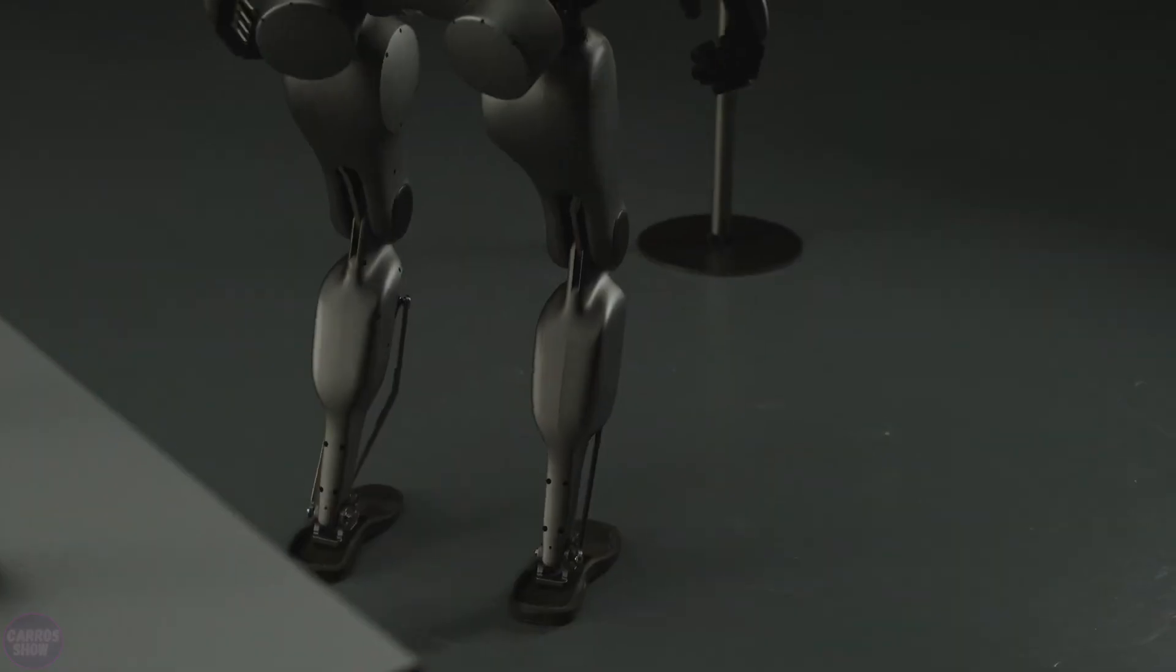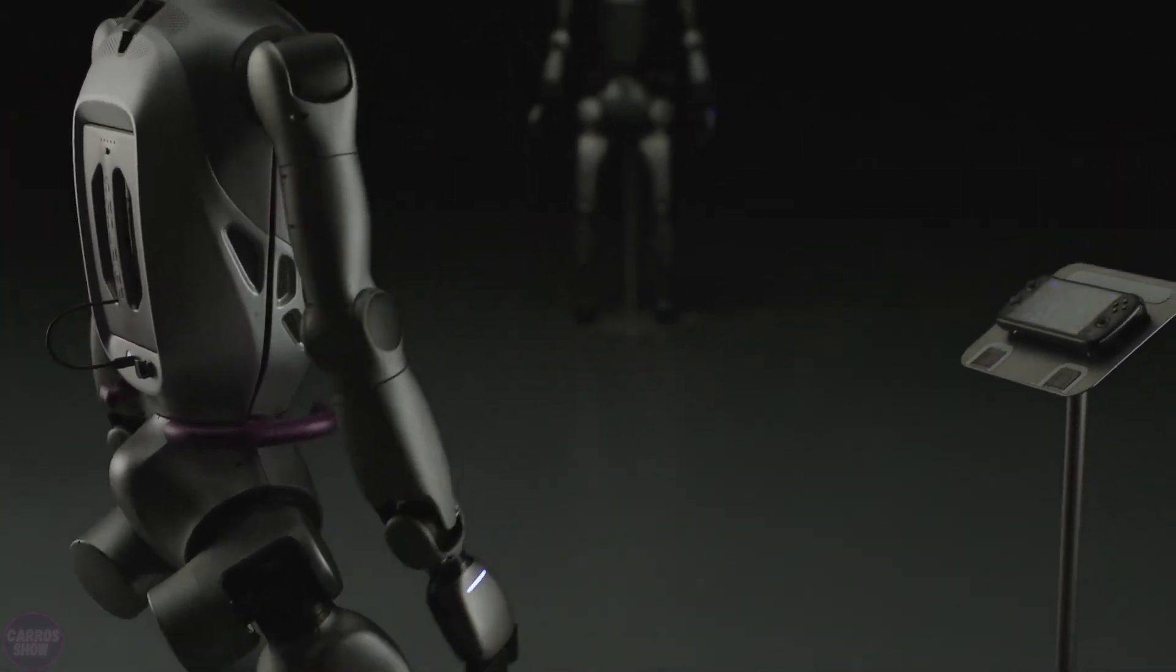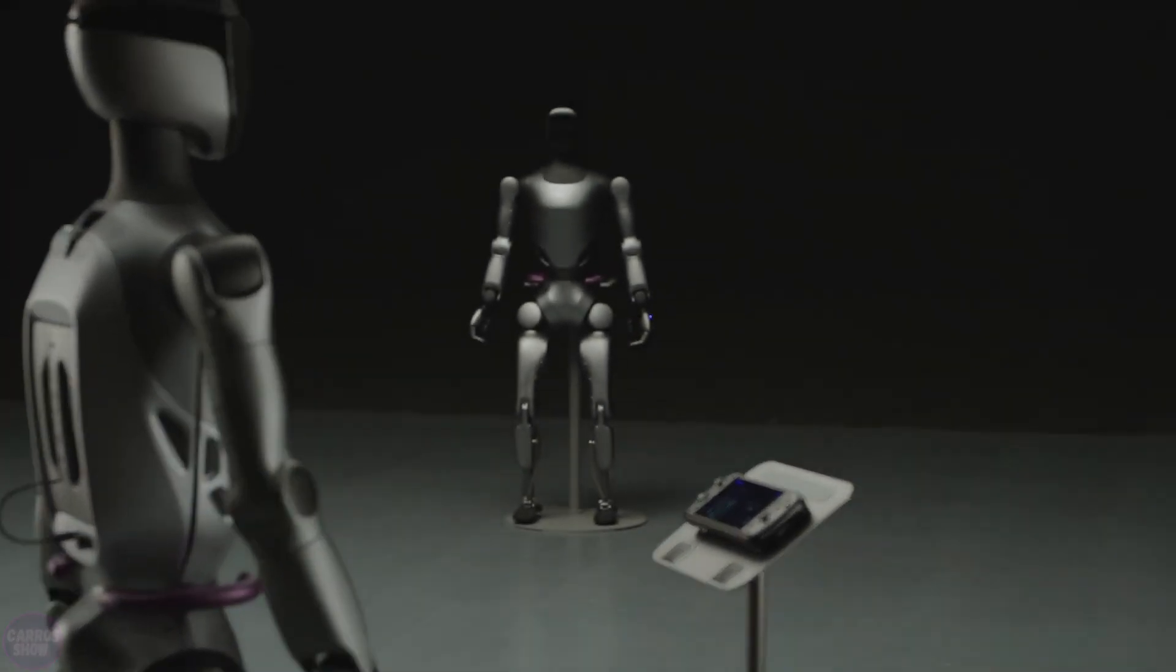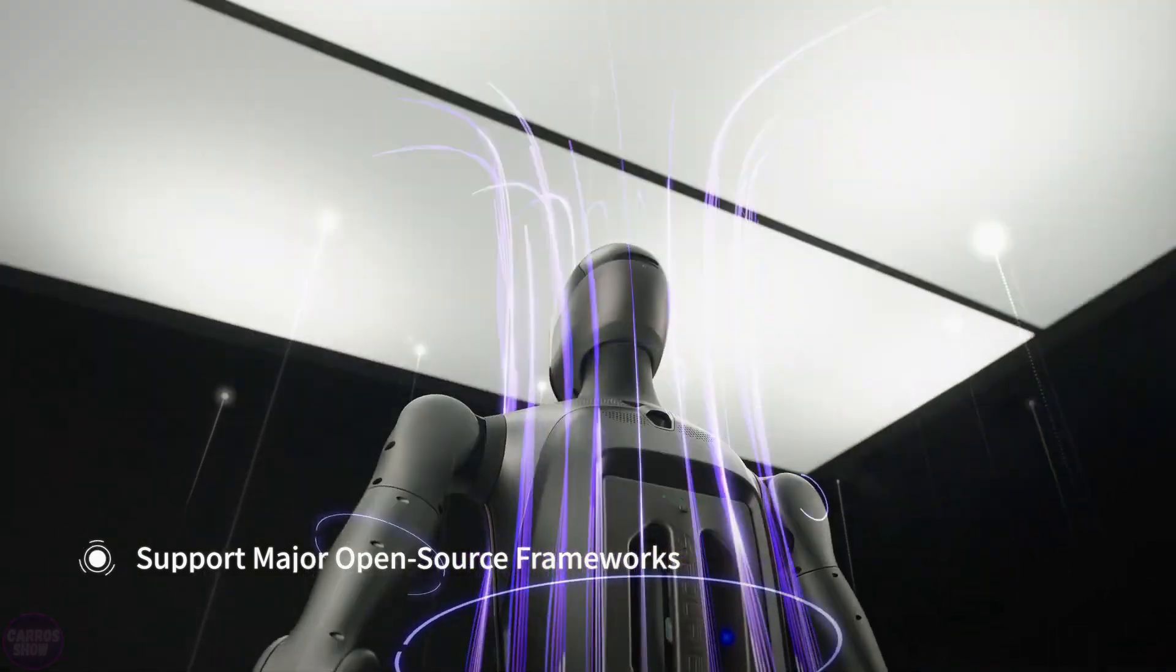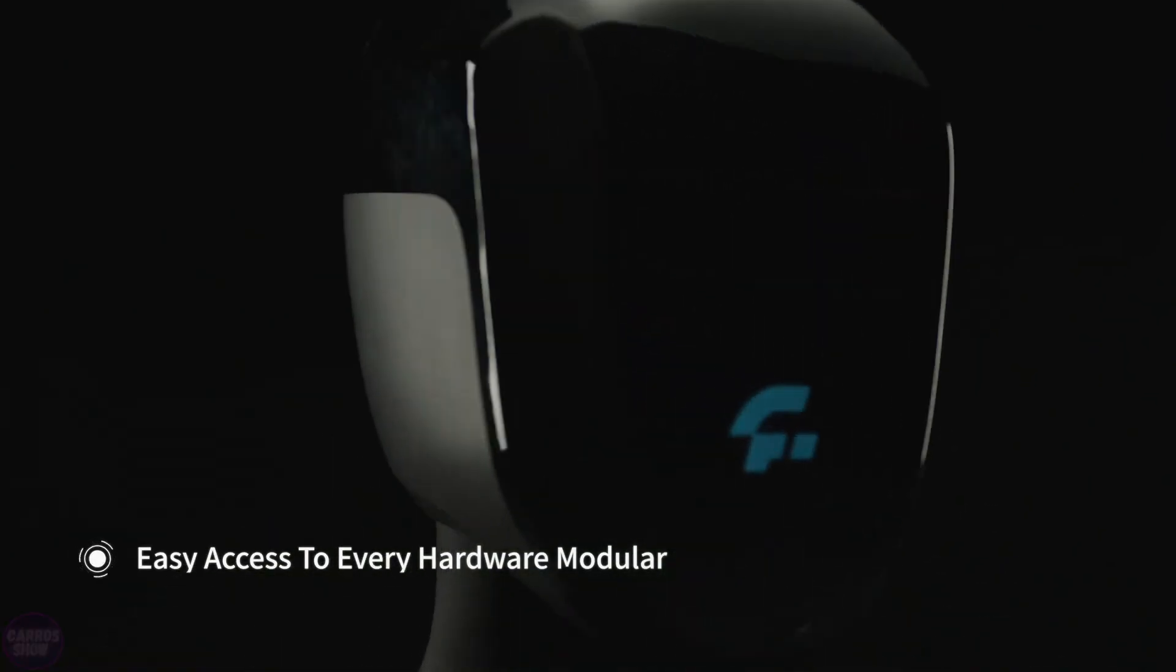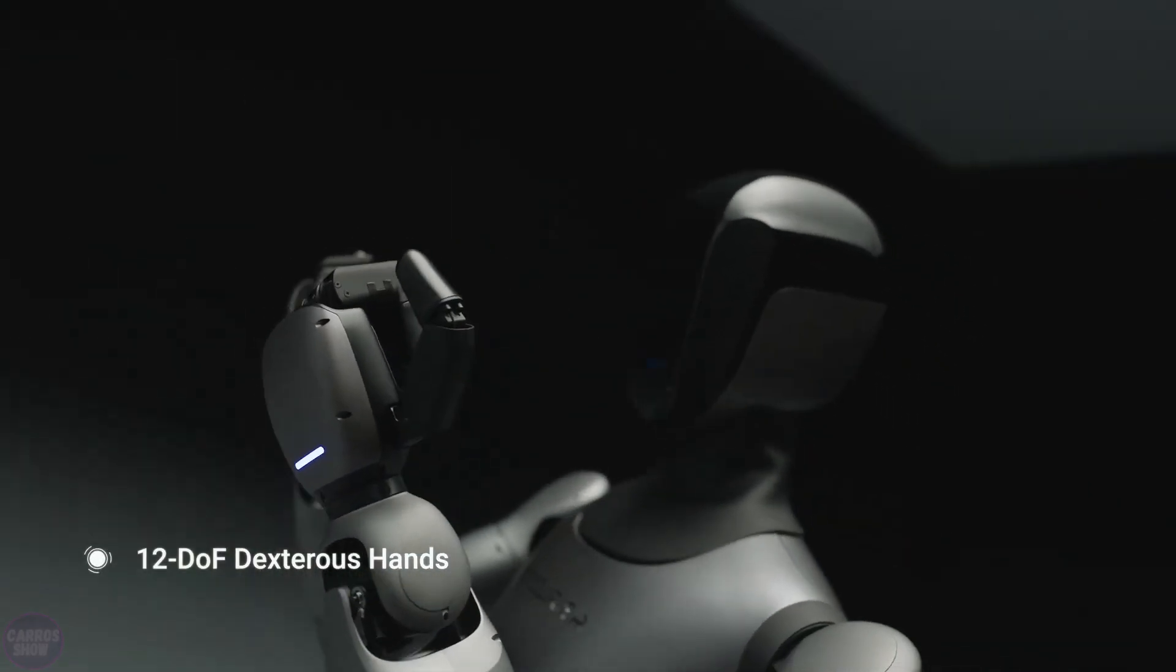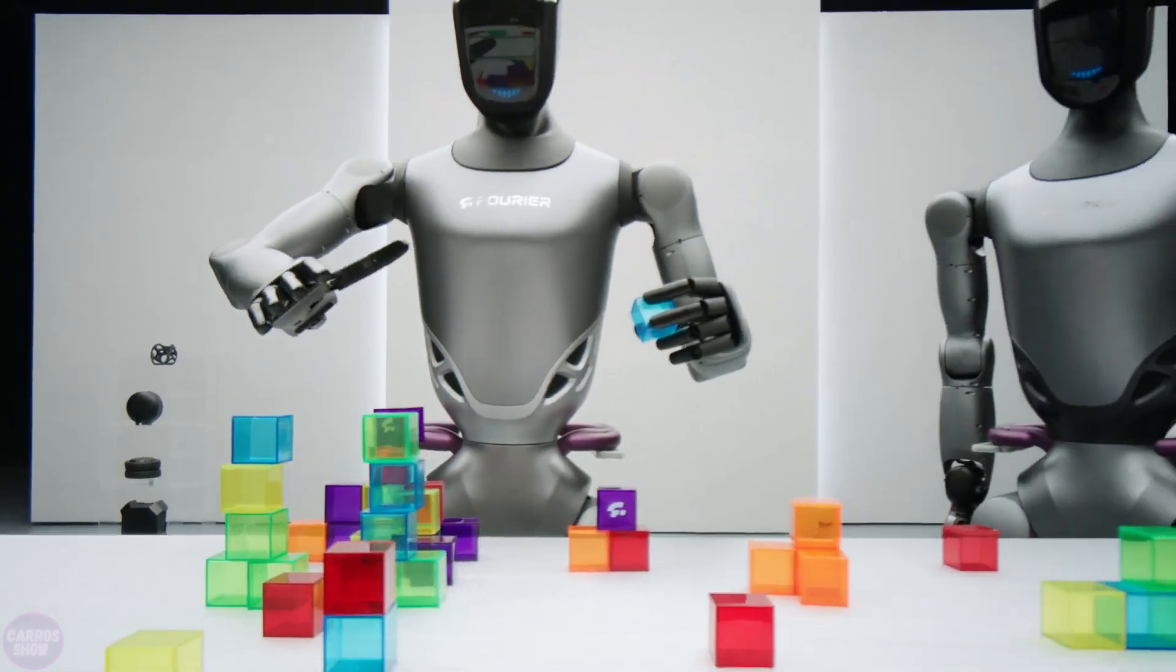Engineers have also redesigned the body structure, and in addition to the new panel design, all cables are now fully integrated inside the robot's body. Thanks to six tactile sensors, the GR2 can determine the shape and material of objects, as well as adjust its grip strength. Overall, the Chinese team really put in the effort, and we look forward to seeing more videos of their new invention.